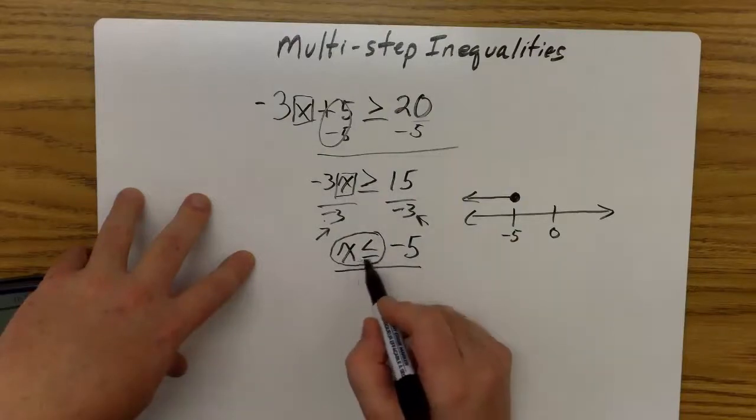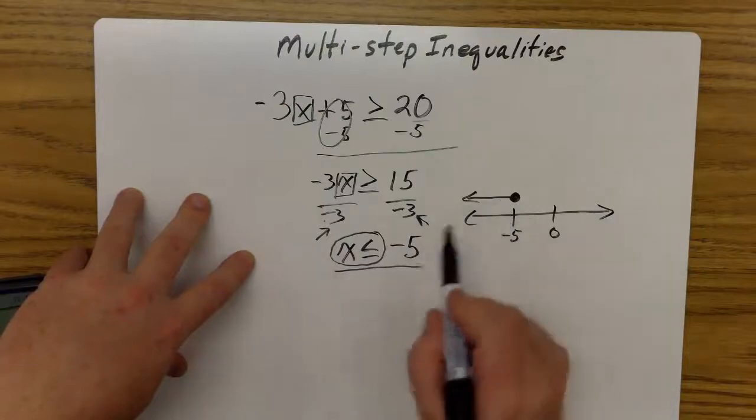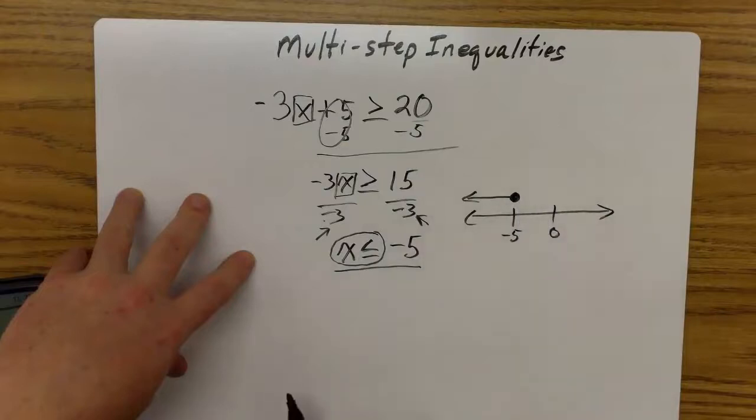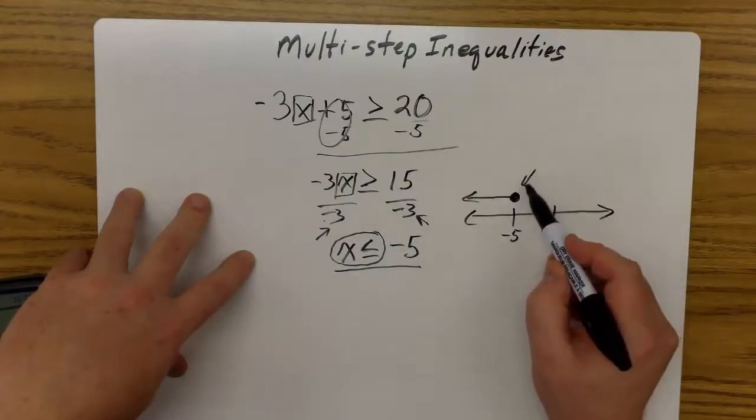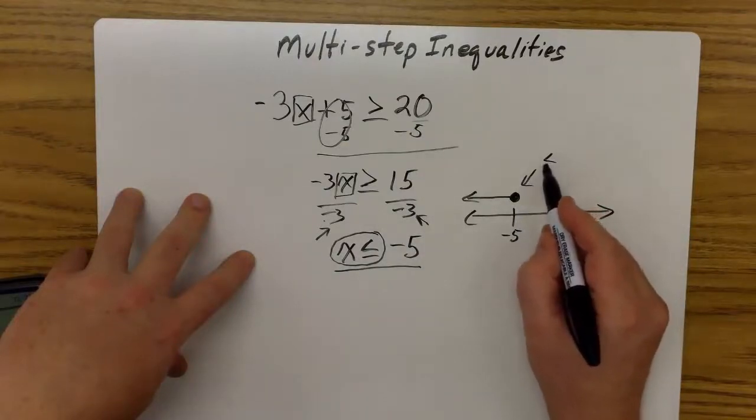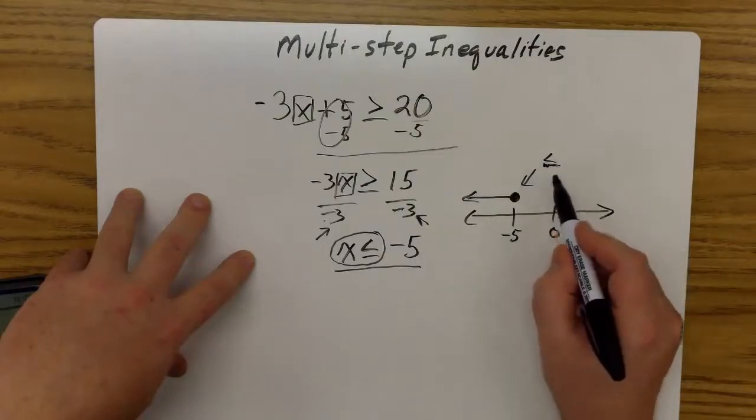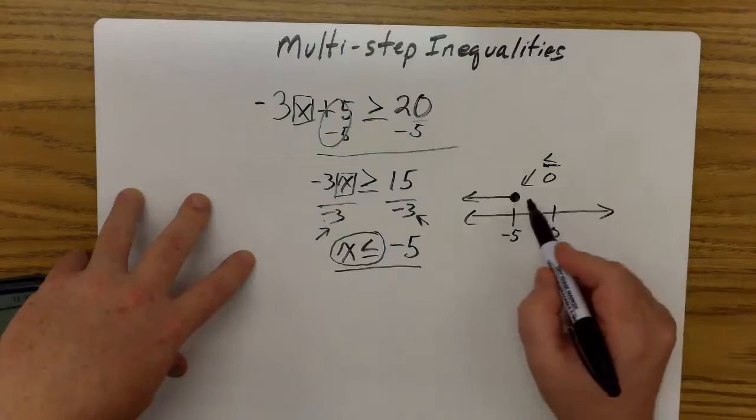The shortcut to this is if my inequality opens away from my variable, it's always arrow left. If it were to open towards my variable, then it would always be arrow to the right. The closed circle is because the symbol had an equal to sign underneath it. If I didn't have this equal to sign here, I would just have an open circle instead of a closed circle.